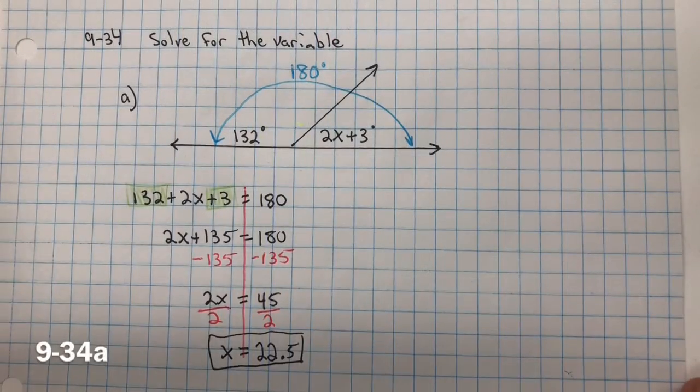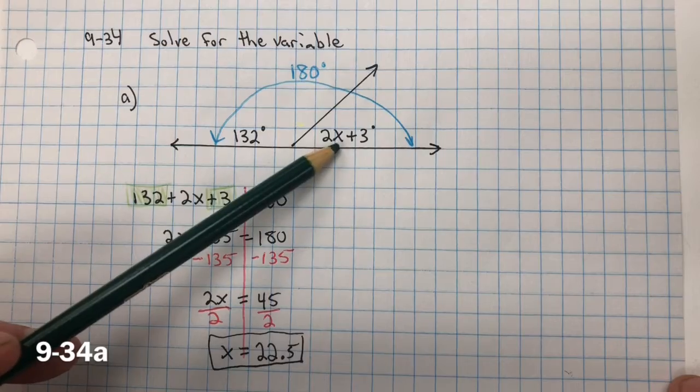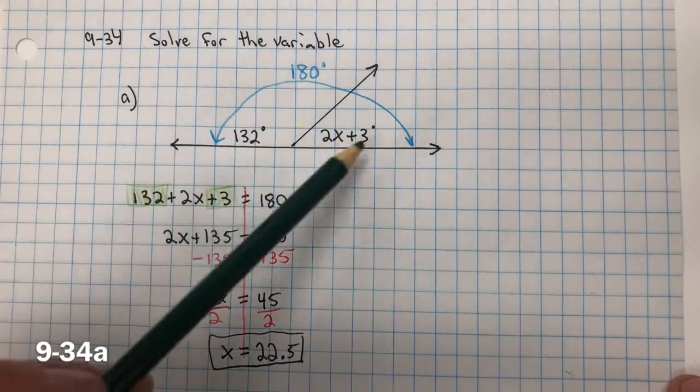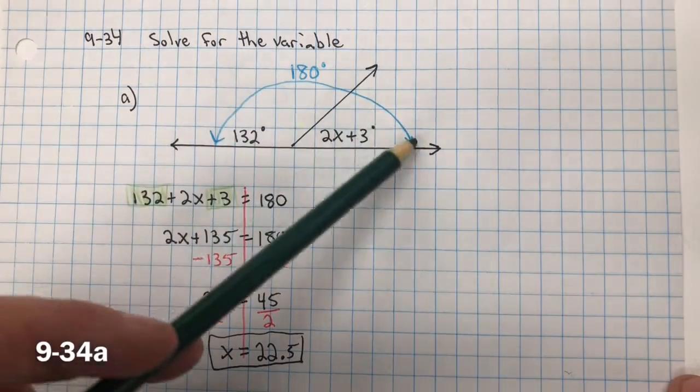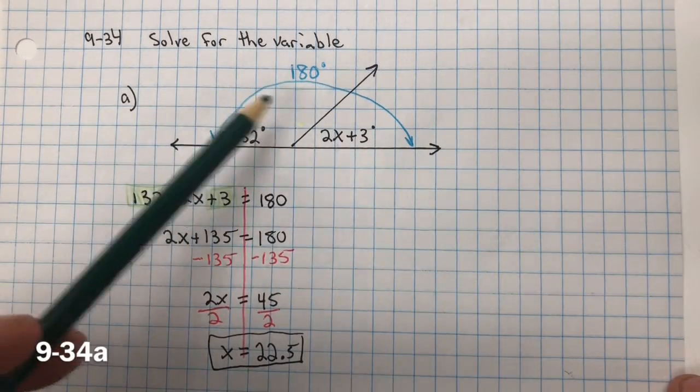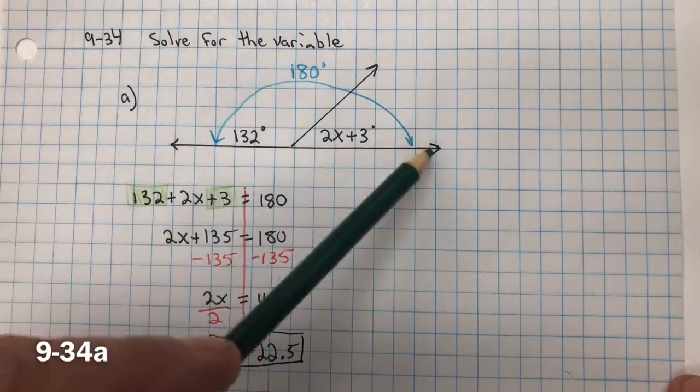For problem 9-34, we need to solve for the variable, so we're solving for x. Here we have a straight angle, or a line, and we know a straight angle has a measure of 180 degrees. These two angles are supplementary. Their sum equals 180 degrees.